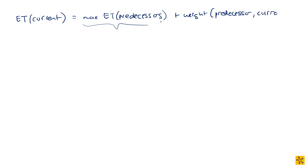Recall how we set up our graph: going from u to v, the weight w is the time it takes to finish v — to get to v as being ticked off and finished. So predecessors and current would be u and v, because u is the predecessor. The whole idea behind early finish time is we look at the maximum of the predecessors' early finishing times plus the weight of that arc, because it tells you how long it takes to complete the job for v.